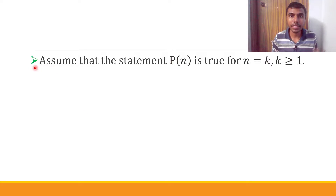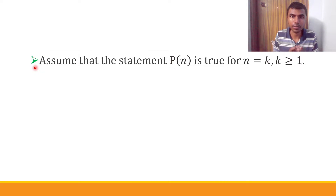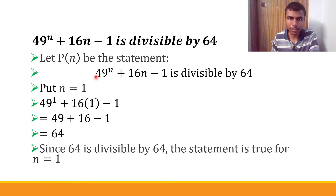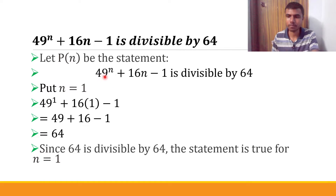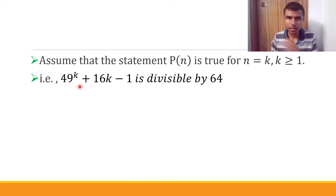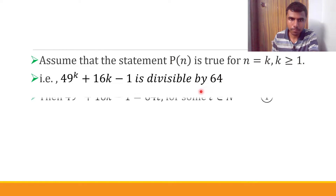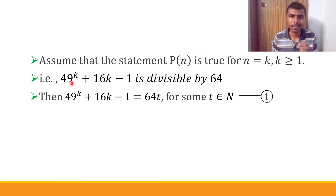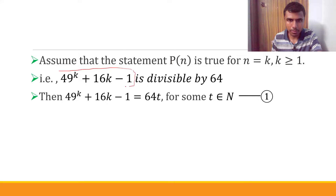Now, by standard procedure, we assume that the given statement is true for n equal to k. The statement we are working with: since it is true for n equal to k, in place of n I put k. This means 49^k + 16k - 1 is divisible by 64.